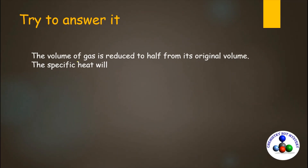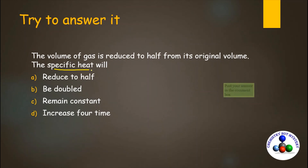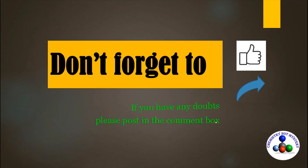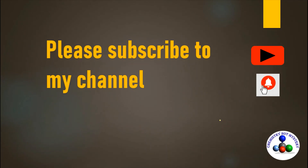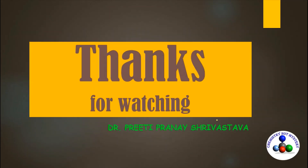I hope now you can answer this question: the volume of a gas is reduced to half from its original volume — will the specific heat be reduced to half, be doubled, remain constant, or increase four times? To solve this, you need to determine whether specific heat is an extensive or intensive property, and whether it is a state function or path function. Post your answer in the comment box, and if you have any doubts, post them there too. Don't forget to like, share, and subscribe to my channel and press the bell icon for notifications. You can also join my Telegram channel or follow me on Twitter or Instagram. Thanks for watching. Keep learning. Stay safe.